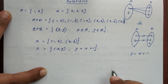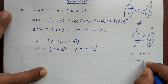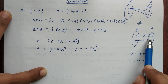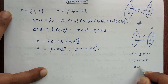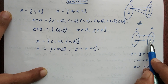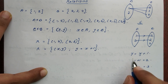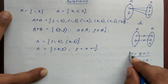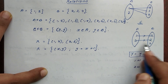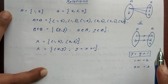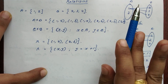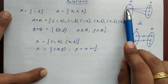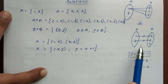If we check the condition y = x + 1: when x = 1, y = 2; when x = 2, y = 3. In a cross product we connect all elements, but in a particular relation we connect only those elements satisfying a specific condition.